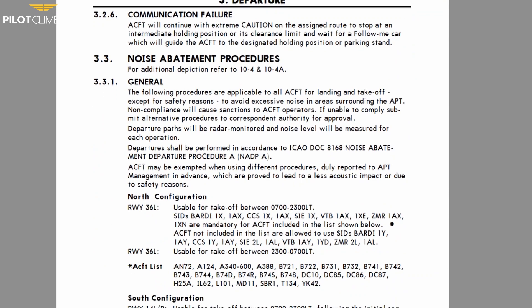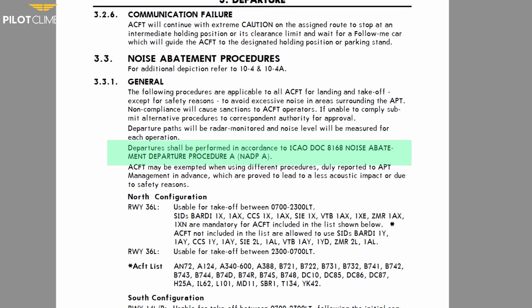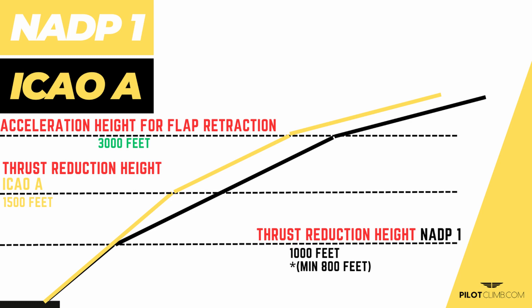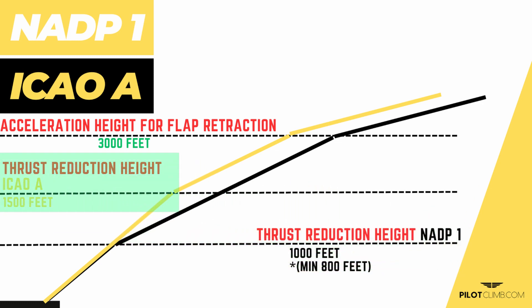Now, in some airports — and you find this information again in the AOI section — you might need to follow Noise Abatement Departure Procedure No. 1 or ICAO Alpha. NADP 1 and ICAO Alpha have the same acceleration height of 3000 feet, meaning you can pitch down and accelerate for flap retraction at 3000 feet. The difference between them is the thrust reduction height: on NADP 1 you reduce thrust at 1000 feet, while on ICAO Alpha you reduce thrust at 1500 feet.